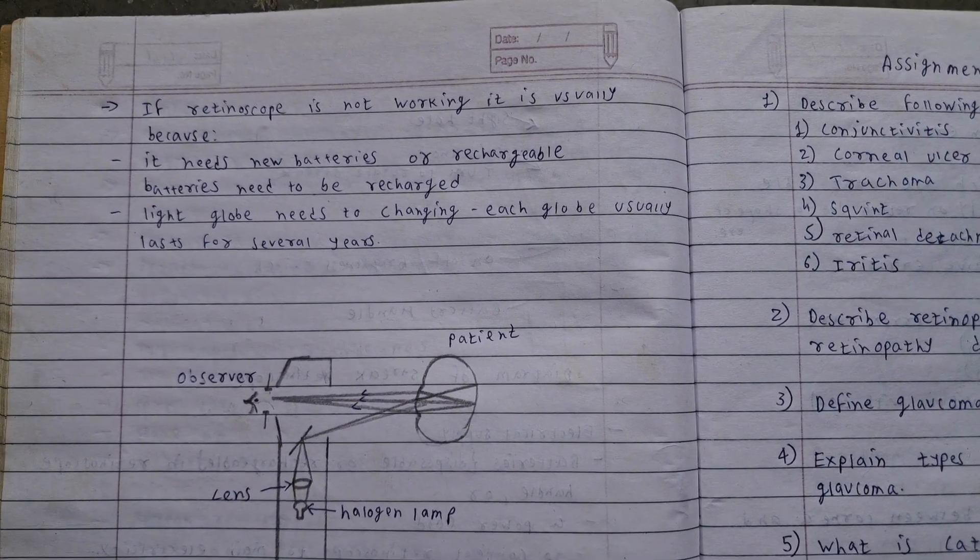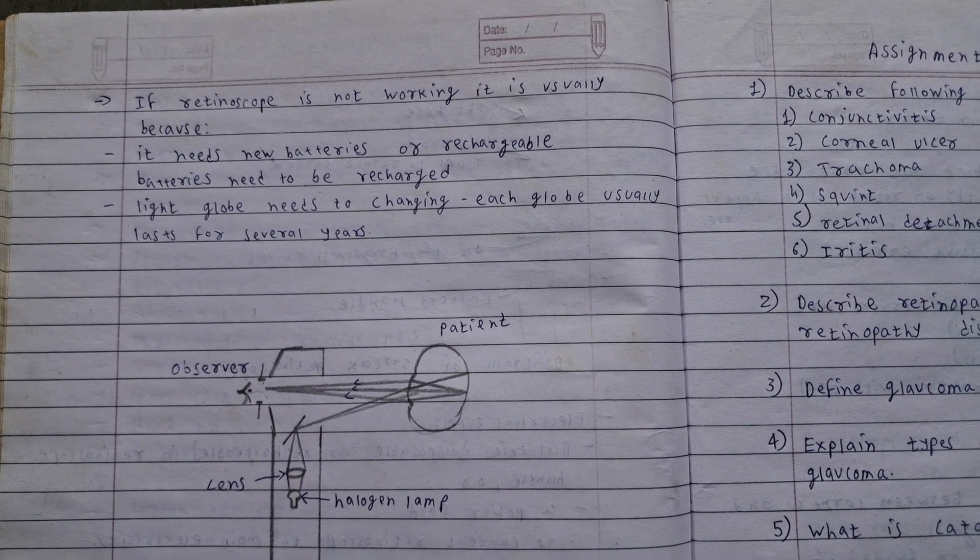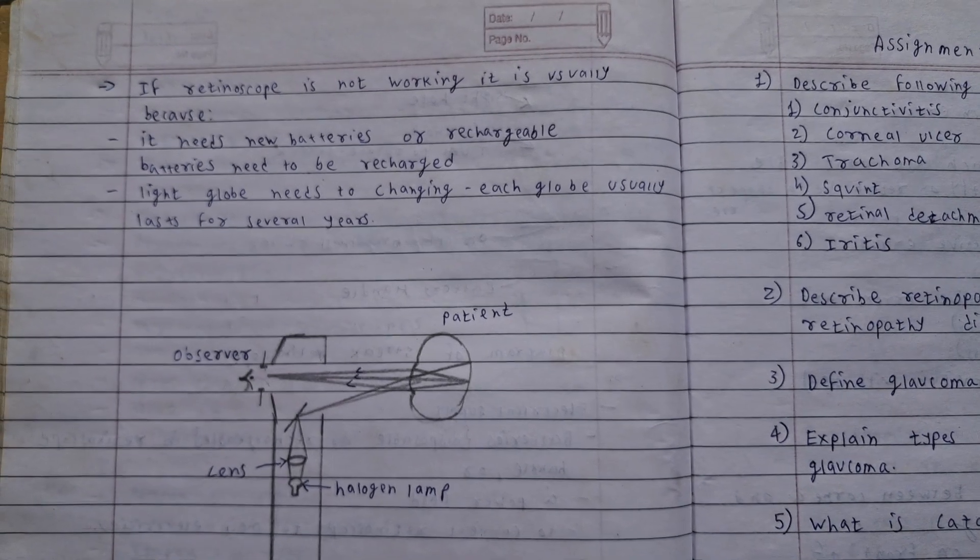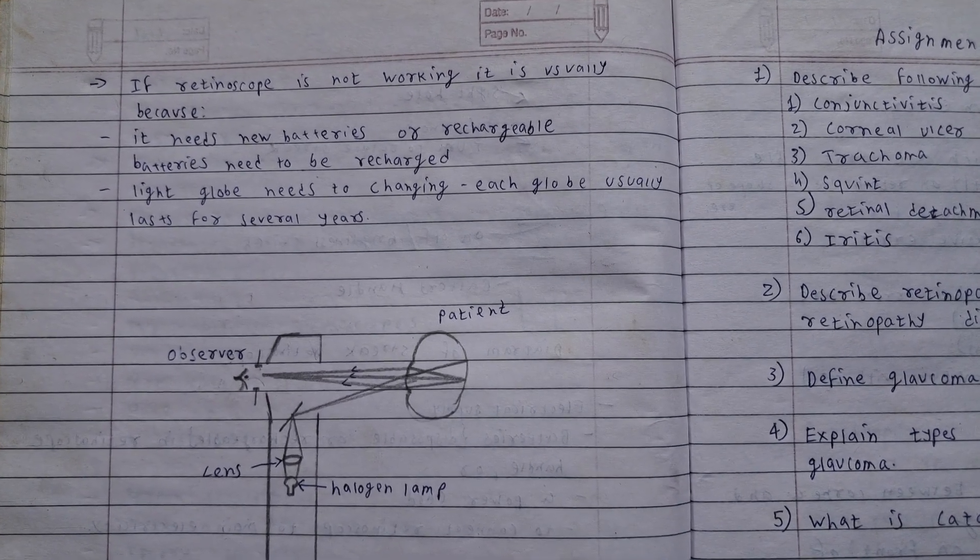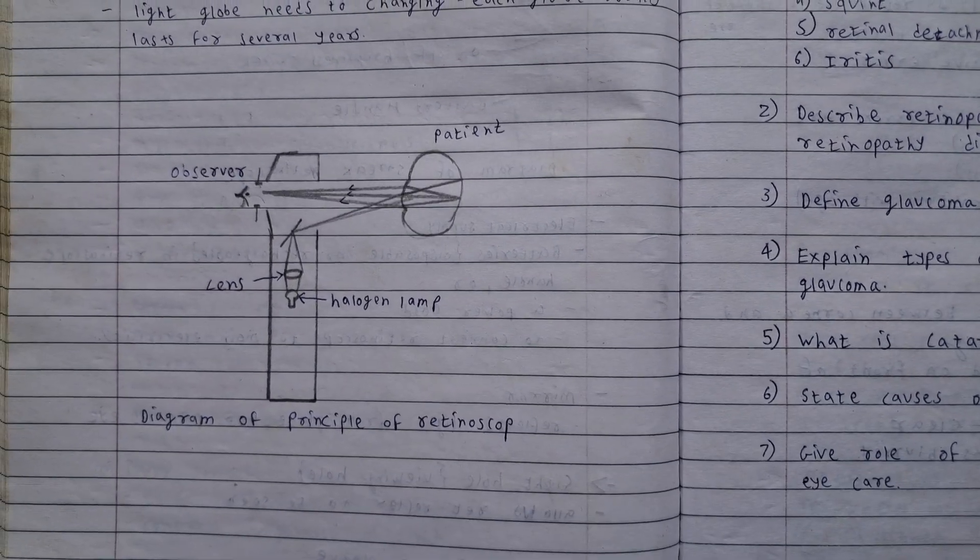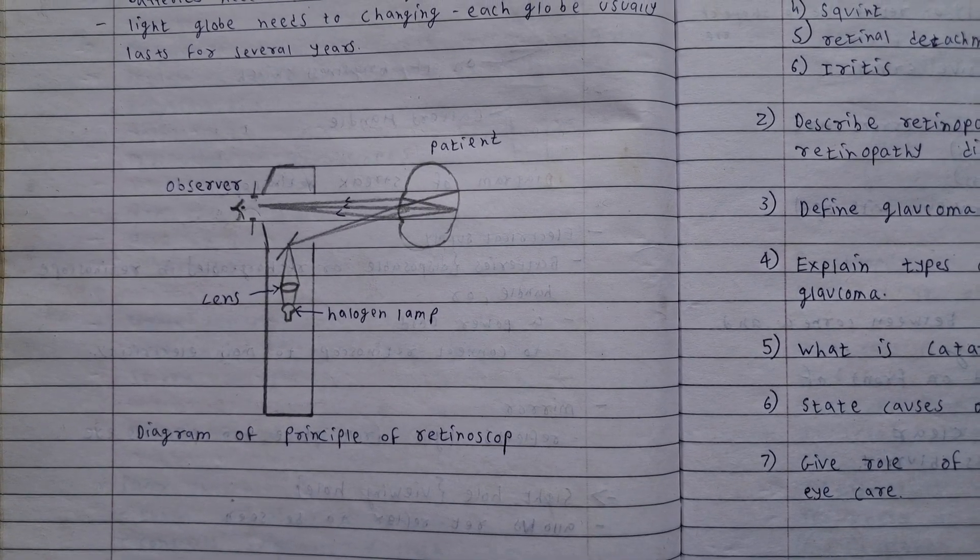If retinoscope is not working, it is usually because it needs new battery or rechargeable batteries need to be recharged. Light globe needs to be changed. Each globe usually lasts for several years. Diagram of principle of retinoscope.